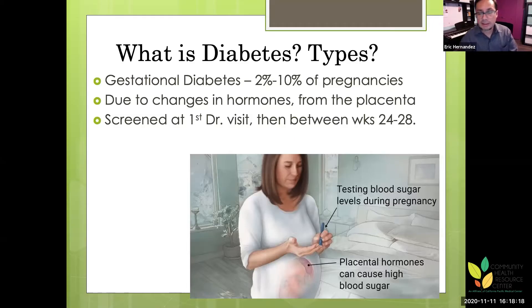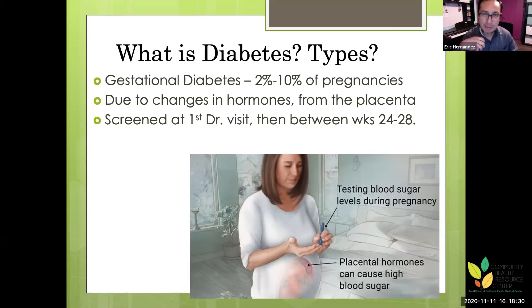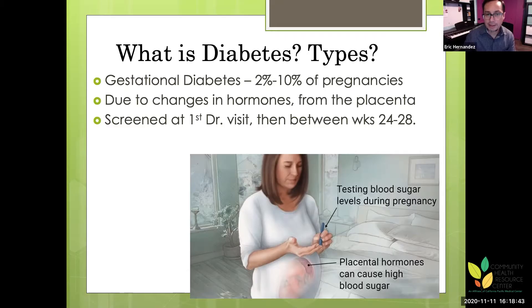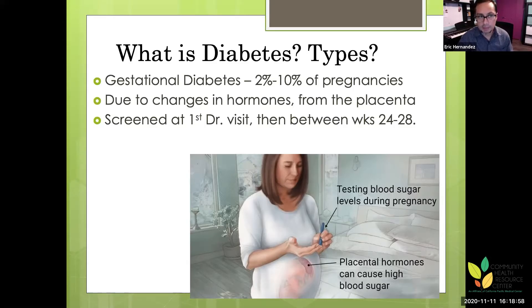The gestational diabetes screening at weeks 24 to 28 involves drinking a very sugary drink — 50 grams of sugar — and checking blood sugar before, then one hour and two hours after. Someone asked before the presentation whether gestational diabetes is treated the same as type 2 — not necessarily, though there are some similarities.